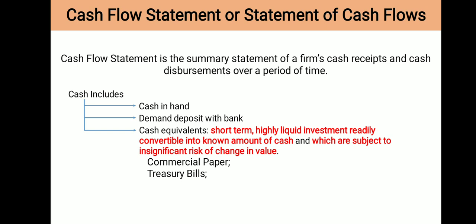The components of Cash Flow Statement include Cash, which covers Cash in Hand and Demand Deposit. There are different types of bank deposits such as Fixed Account, Saving Account, Recurring Account, and Current Account. Here, Current Account is indicated as a Demand Deposit.